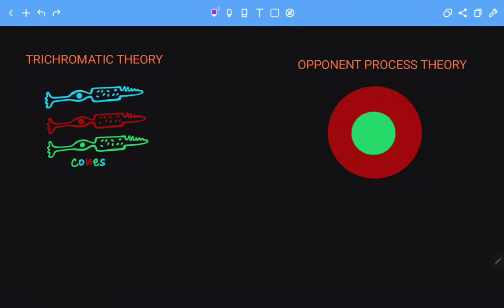Hello everybody, in this video we are going to talk about the trichromatic theory and the opponent process theory. These are two theories that are associated with the mechanism of observing various colors.